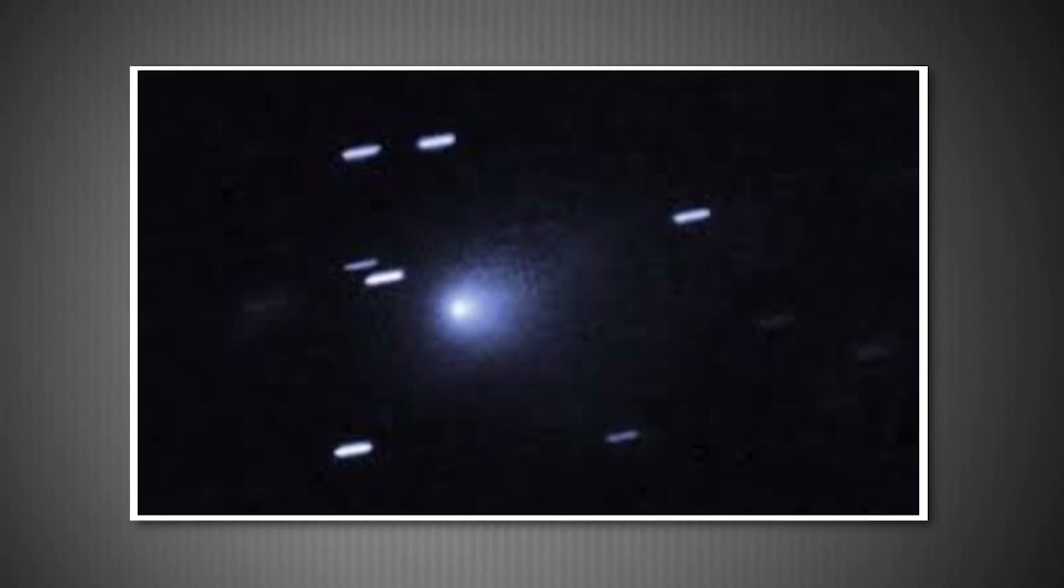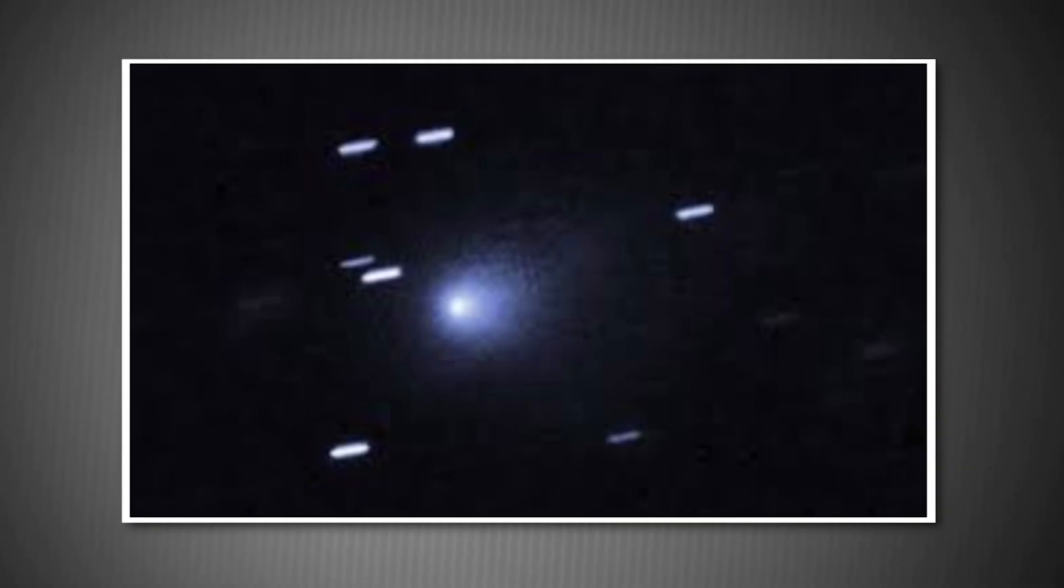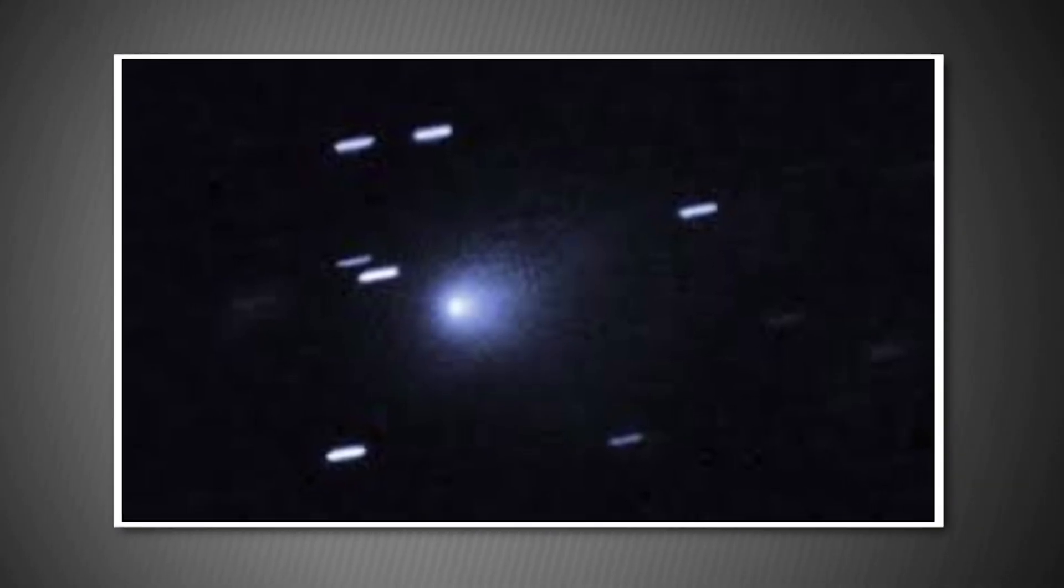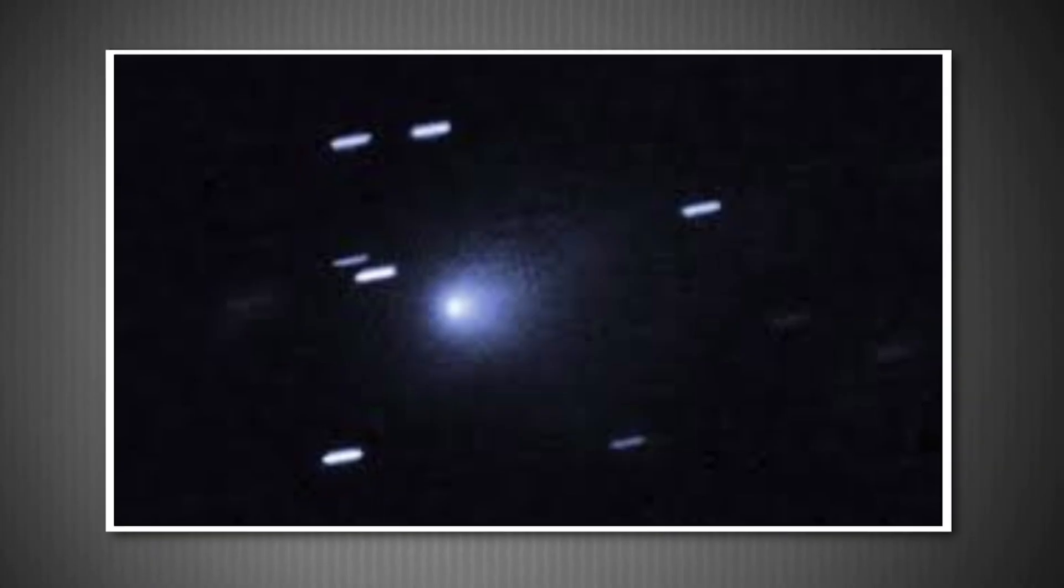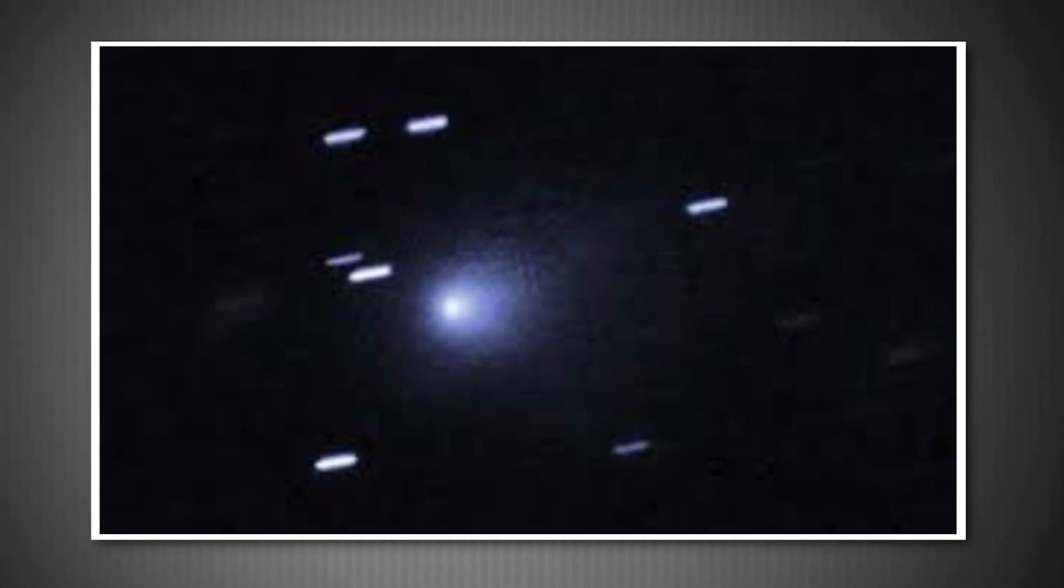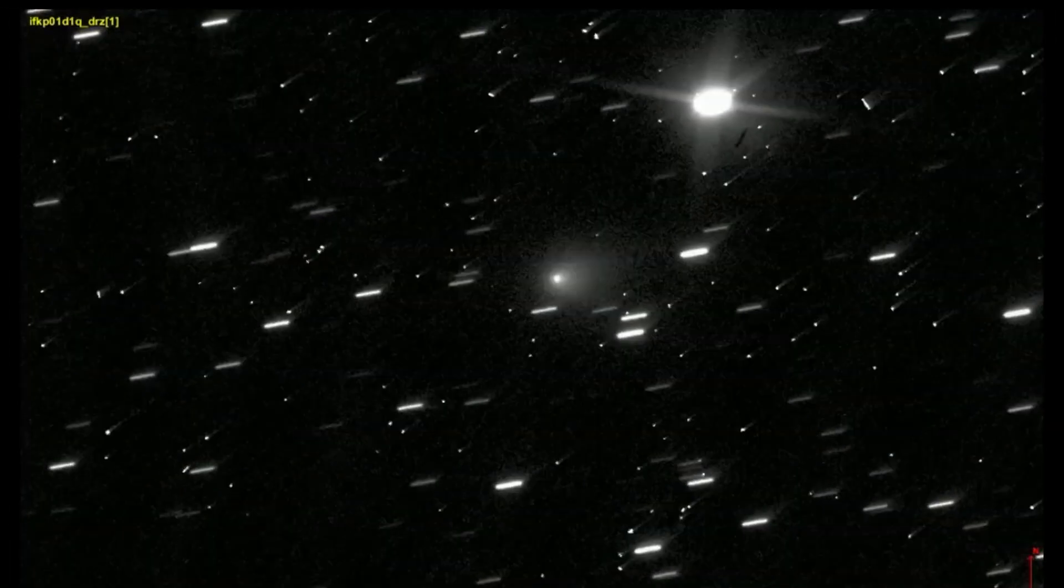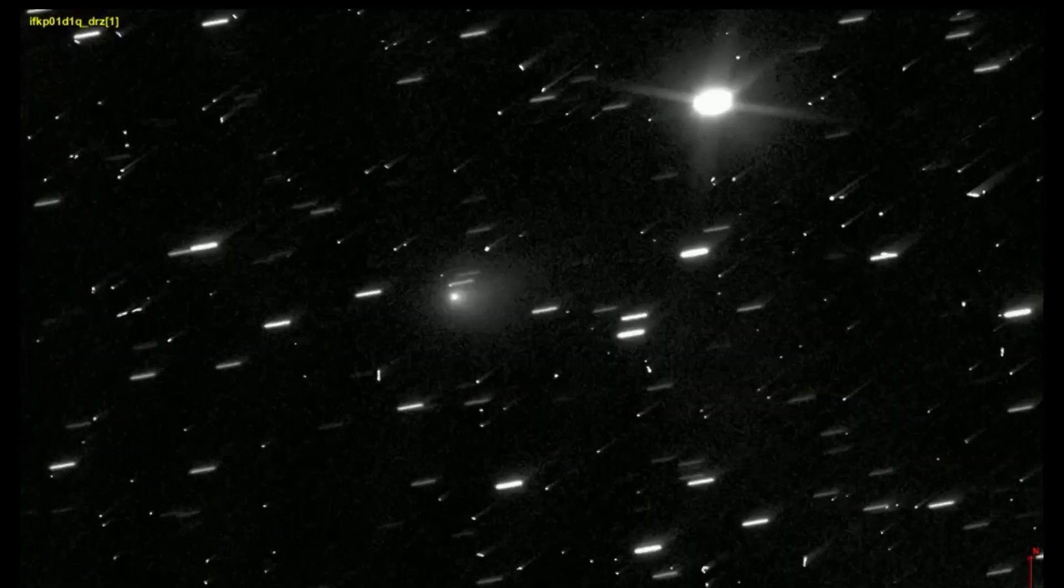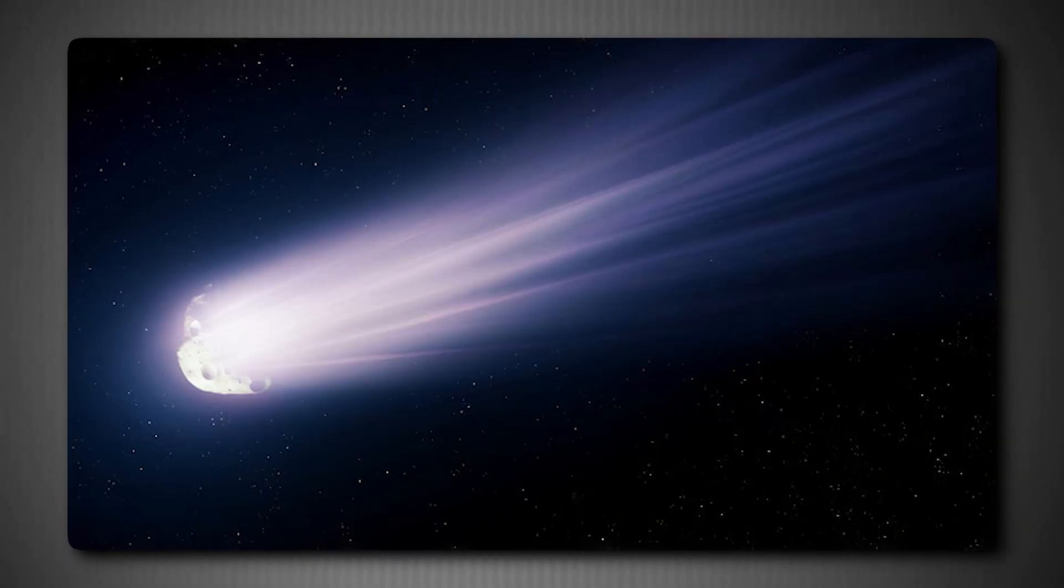One of the most tantalizing questions about 3I ATLAS is, where did it come from? We know the general direction, tracing its trajectory backward through space. Astronomers have determined that 3I ATLAS originated from the direction of the constellation Sagittarius near the Milky Way's galactic center. And 3I ATLAS just happened to drift past our shores exactly when we had developed the technology to recognize it for what it is.